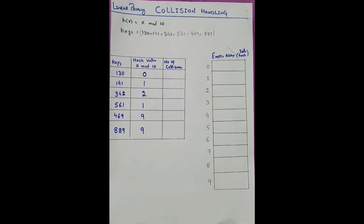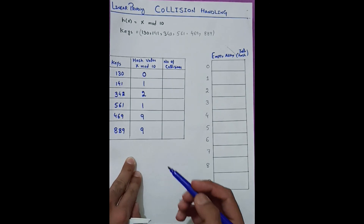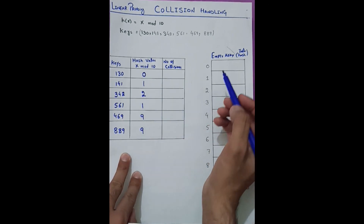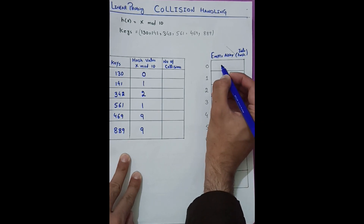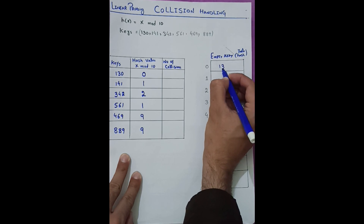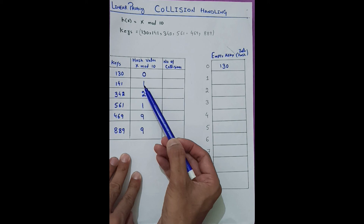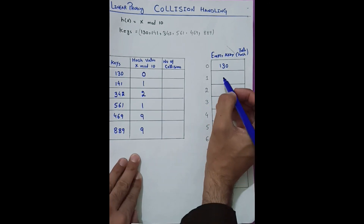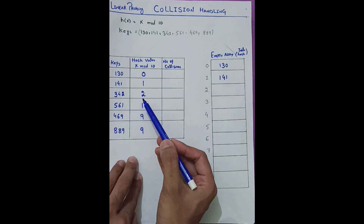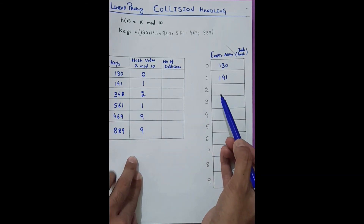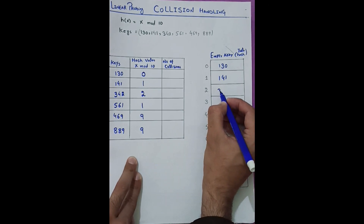Starting with 130 — its mod is 0 and index 0 is empty, so we place 130 at index 0. For 141, its mod is 1 and index 1 is also empty, so we place 141 there. For 342, its mod is 2 and index 2 is empty, so we place 342 there. No collision occurs in any of these three cases.